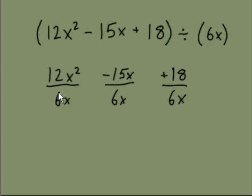We have 12x squared over 6x. We have negative 15x over 6x. And finally, the positive 18 over 6x. Your next move is to simplify these three fractions individually. When we're simplifying fractions, you can look at the number parts, the coefficients first, and simplify those and then deal with the variables.